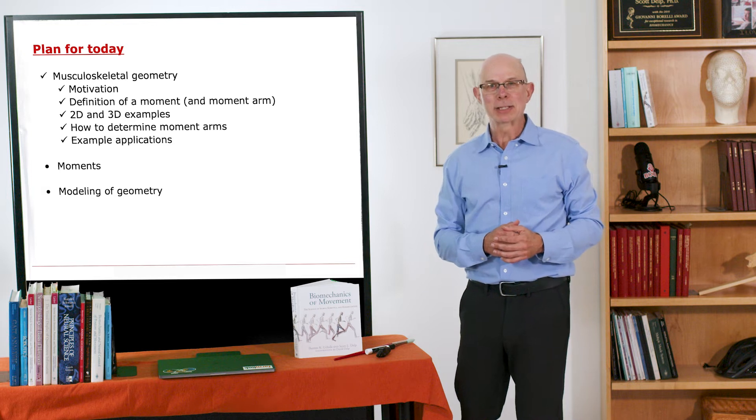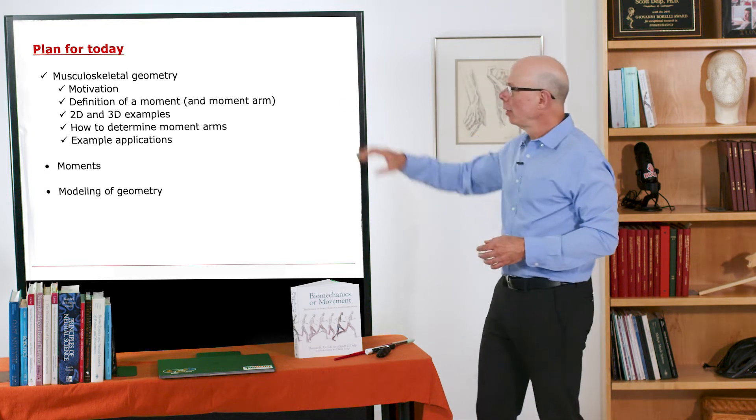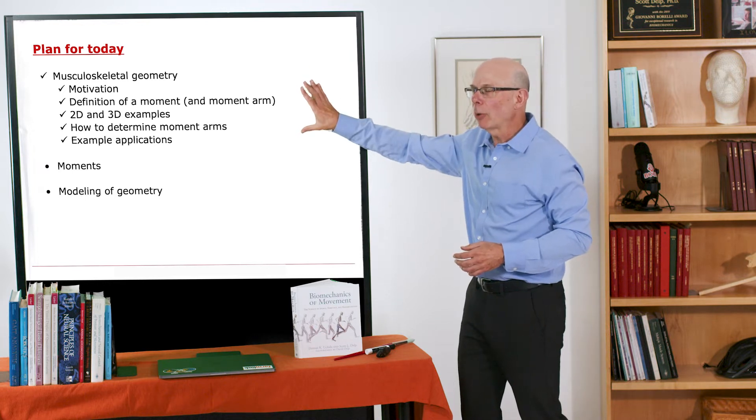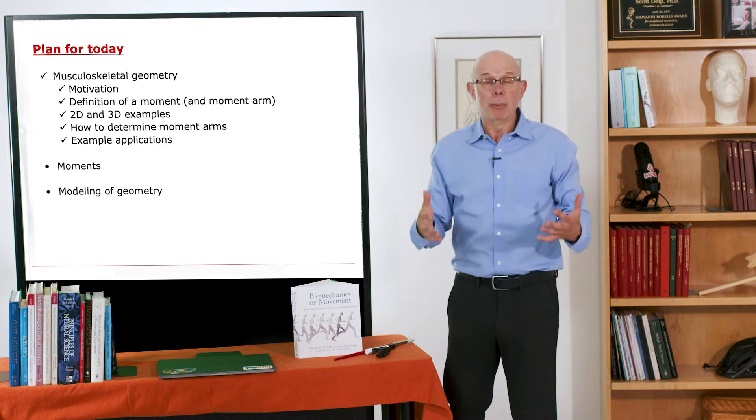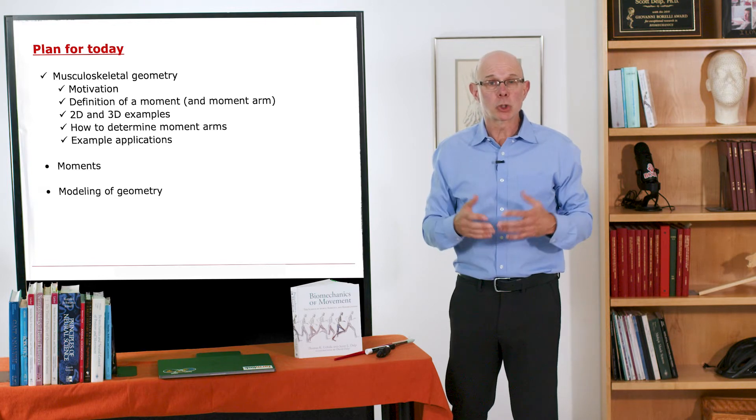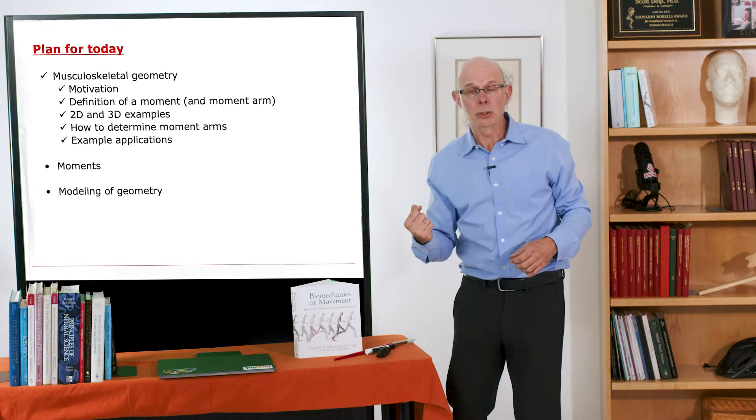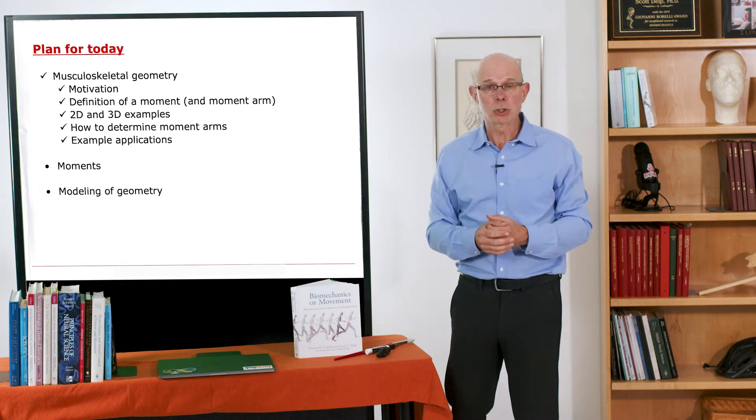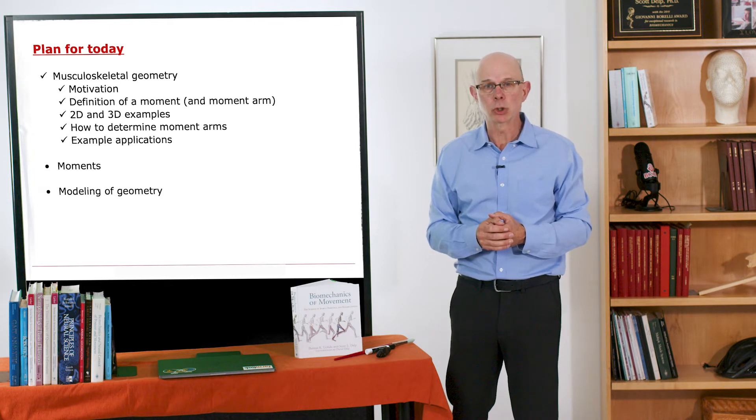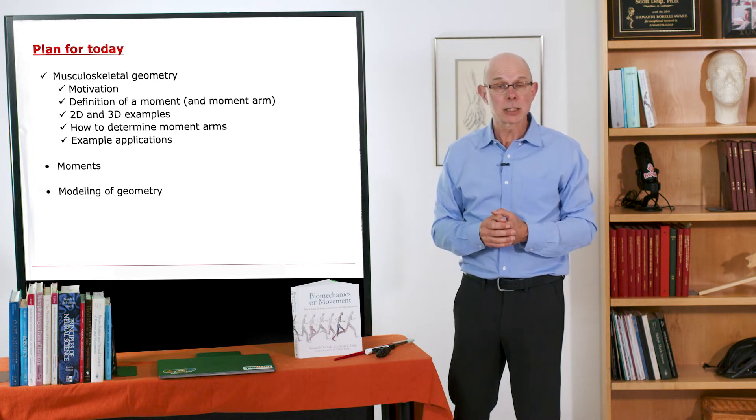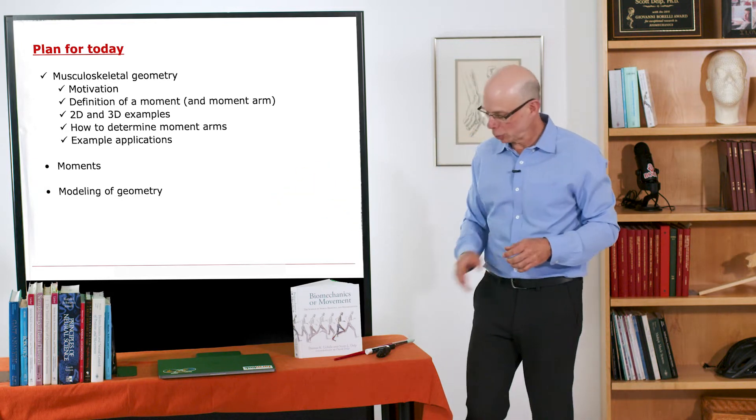Continuing our analysis of musculoskeletal geometry, we've covered the basics. Now what I want to get to is the big picture: joint moments, how we measure muscle strength, and how the forces in muscles and the moment arms of muscles work together to produce the maximum moments that can be generated by muscles about joints. That's the plan, and then we'll conclude with details of how we model musculoskeletal geometry.